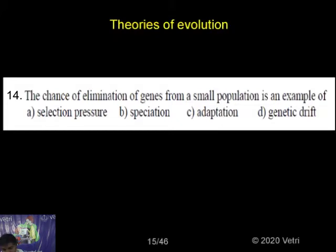The change of elimination of genes from a small population is an example of: selection pressure, speciation, adaptation, or genetic drift.